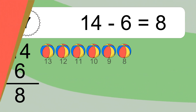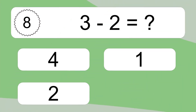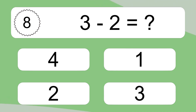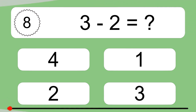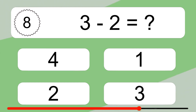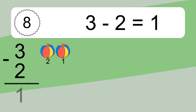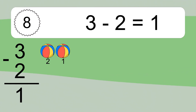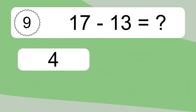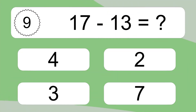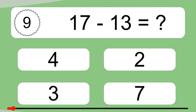3 minus 2 equals what? 3 minus 2 equals 1. Let's count it: to 1.